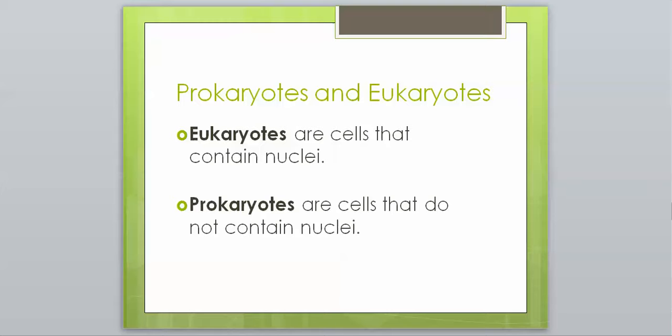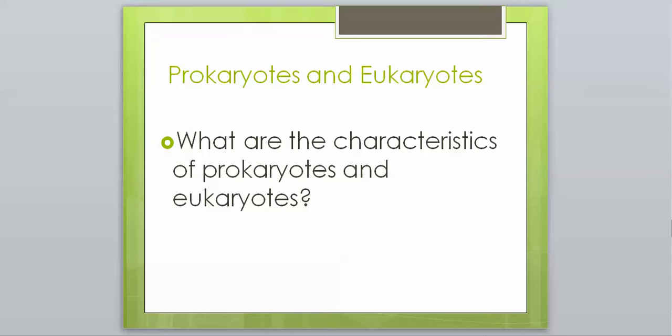The prokaryotes are the other type. Those are cells that do not contain nuclei. So those are our two types of cells. Eukaryotes have a nucleus. Prokaryotes do not have a nucleus.